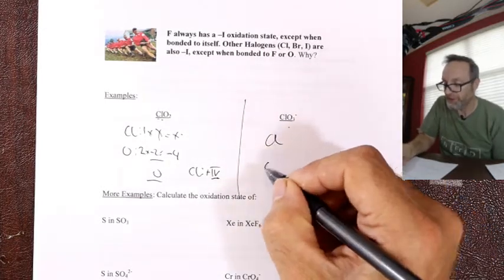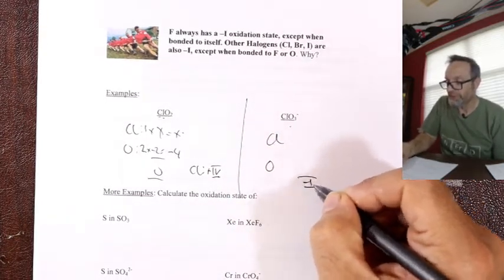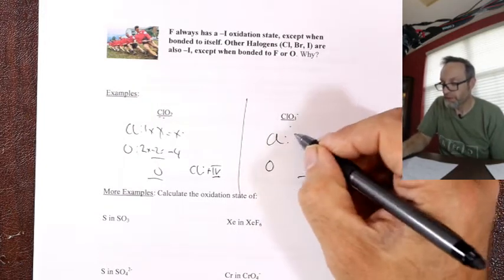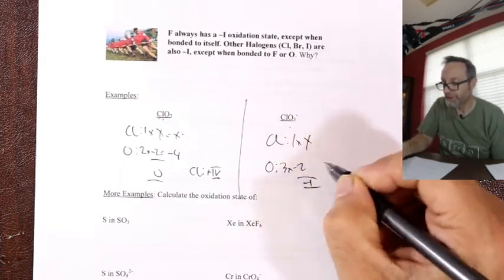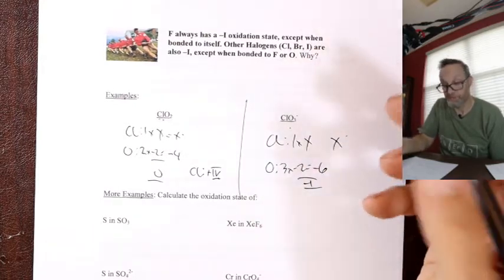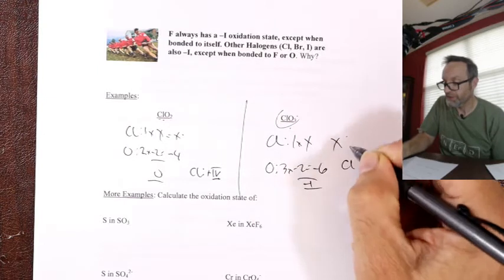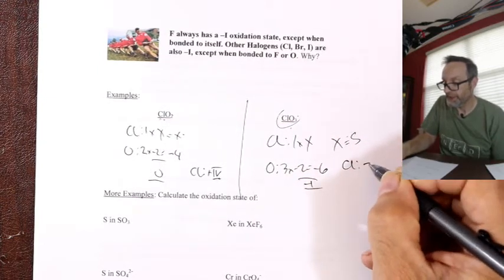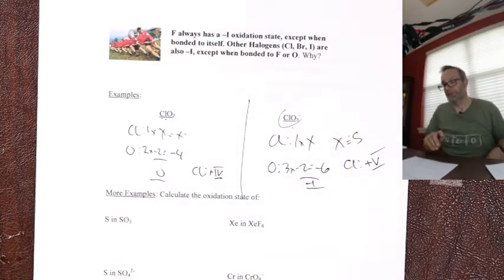For ClO₃⁻: chlorine is the loser, oxygen is the winner. It adds up to minus one. Three times minus two equals minus six. X must be plus five. Chlorine has a plus five oxidation state.